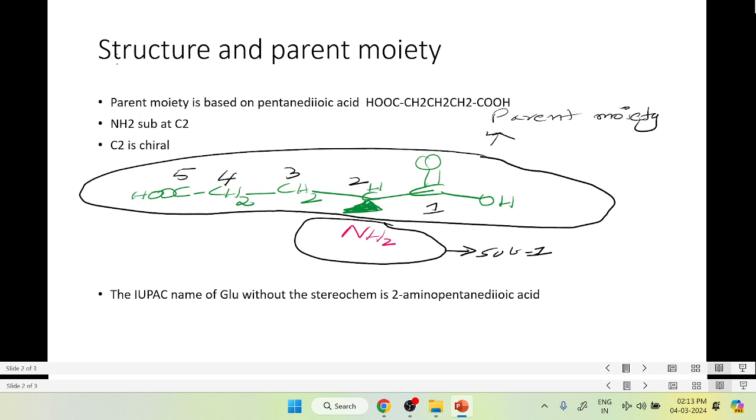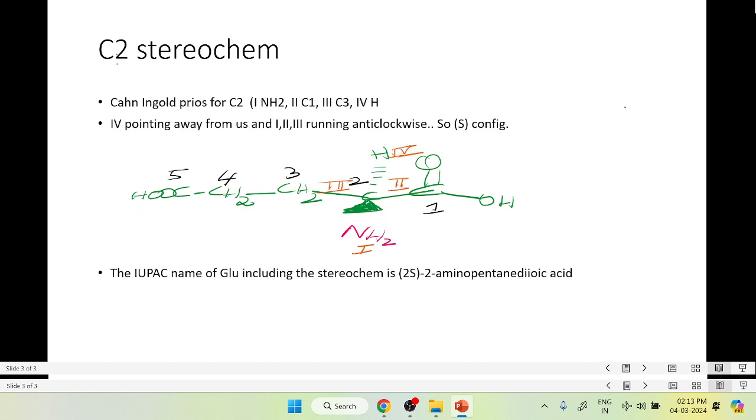Now let's fix the chirality of C2. The Cahn-Ingold-Prelog priorities are: one is NH2, two is C1, three is C3, and the fourth pointing away from us is hydrogen. One, two, and three are going counterclockwise, so this is an S configuration. The IUPAC name of glutamic acid including the stereochemistry is (2S)-2-amino pentanedioic acid. Thank you.